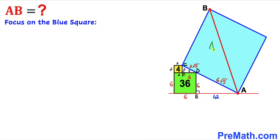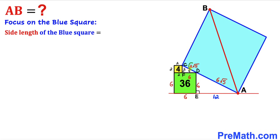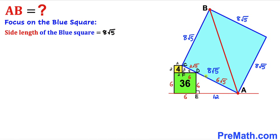Now let's focus on this blue square and calculate its side length. The side length of this blue square is going to be 2√5 plus 6√5. Adding them up, the side length of this blue square turns out to be 8√5. Since we are dealing with a square, all side lengths of this blue square are 8√5 across the board.